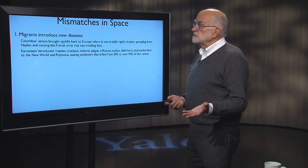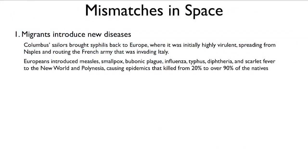This process also occurs in space. For example, migrants introduce new diseases. The people of Europe had not encountered syphilis before Columbus's sailors brought it back. It rapidly moved from ports in Spain into Naples — it was initially highly virulent, killing people within about 40 days of infection, and it spread out of Naples and routed the French army that was invading Italy. The King of France actually pulled his army out of Italy because he was losing so many soldiers to this dreadful, previously unknown disease. In the other direction, Europeans introduced measles, smallpox, bubonic plague, influenza, typhus, diphtheria, and scarlet fever to the New World and to Polynesia, causing epidemics that killed 20 percent to over 90 percent of the population.